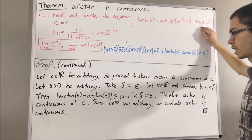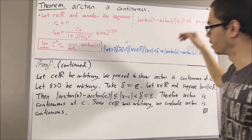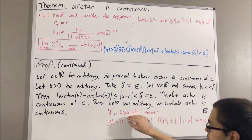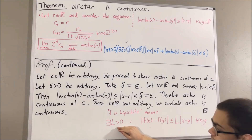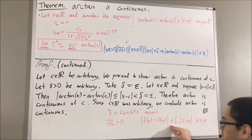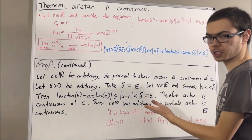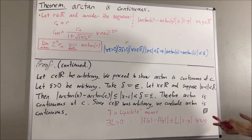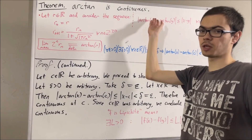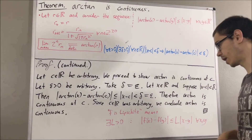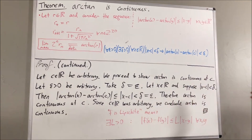Now, because arctangent satisfies this property, arctangent is what we call a Lipschitz function. A Lipschitz function is one where there exists some positive constant L such that the absolute value of f of x minus f of y is less than or equal to L times the absolute value of x minus y, for all x and y in the domain. It turns out every Lipschitz function is uniformly continuous, and every uniformly continuous function is continuous. So not only is arctangent a continuous function, but it's also uniformly continuous. We'll talk about uniform continuity in future videos. And that's pretty much it for this video — we'll see you next time.